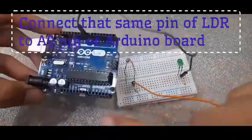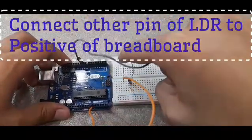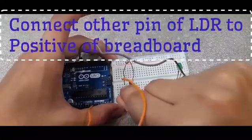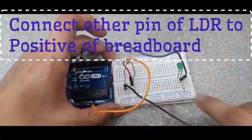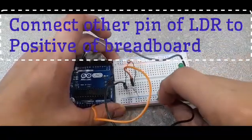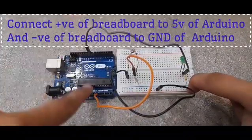Then you will connect the positive of breadboard to the 5 volt of the Arduino, and the negative of breadboard to the GND of Arduino board.